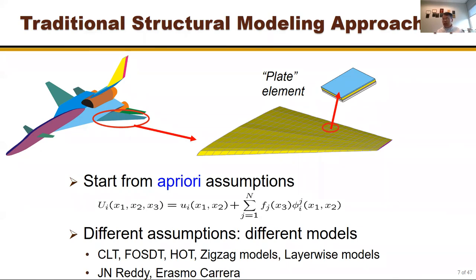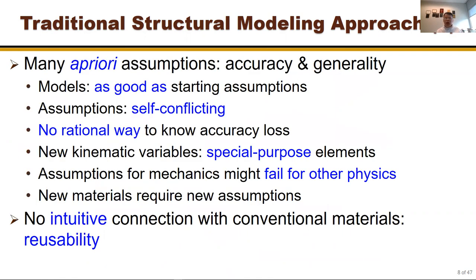The traditional structural modeling approach usually starts from a priori, ad hoc assumptions. To construct a plate model, we express the 3D displacement in terms of 2D functions plus assumed distributions through the thickness — like Classical Lamination Theory, First Order Shear Deformation Theory, higher-order theories, or zigzag models. The problem with these assumptions is accuracy and generality. For the classical model using Kirchhoff's assumption, you won't get the transverse normal stress because you assumed it to be zero from the beginning.